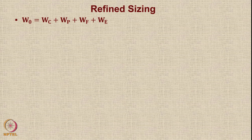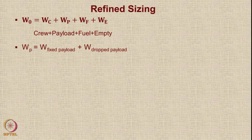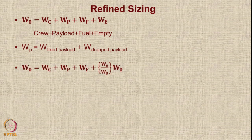In refined sizing, we use the same master formula: the aircraft gross weight is a combination of four weights — crew weight, payload weight, fuel weight, and empty weight. We say that the payload is going to be a combination of fixed payload which is not released or consumed, and the dropped payload. We replace W_E by (W_E/W0) into W0 — that is a straightforward substitution.